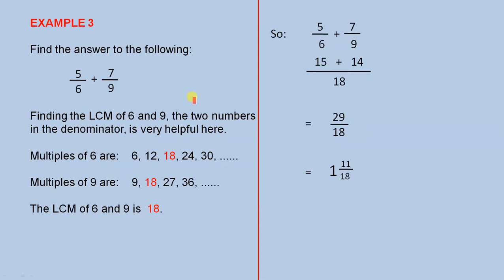Finding the LCM of 6 and 9, the two numbers in the denominator is very helpful here. So the multiples of 6 are these numbers. The multiples of 9 are these numbers. The LCM of 6 and 9 is 18.